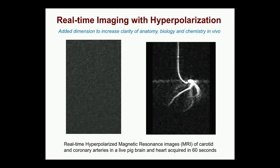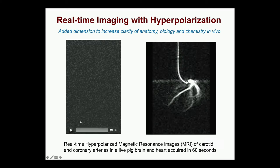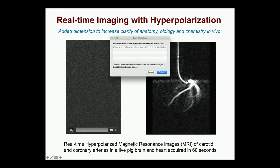This is data from about 10 years ago. We injected a hyperpolarized compound into the brain of a mouse — this is in real time — and all you see is the real-time imaging of brain vasculature.